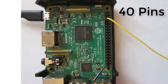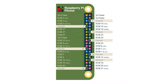The Raspberry Pi 3 has 40 GPIO pins. All the other models have only 26 GPIO pins. GPIO stands for General Purpose Input-Output. The picture shows how the pins are numbered.